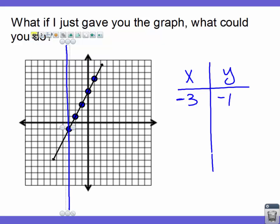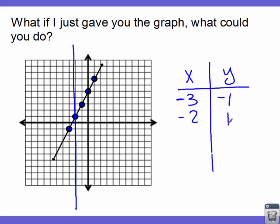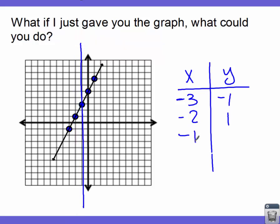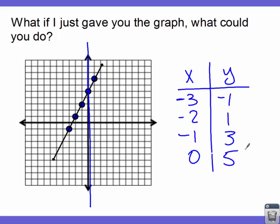Then the next point is negative two, positive one. The next is negative one, positive three — and you should notice a pattern in your numbers, which helps find the next coordinates easily. The next one lies on the axis: x is zero, y goes up five points. The last coordinate is one, seven.